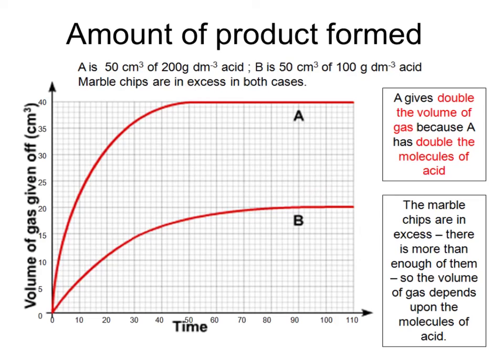And a similar idea here, again using yet another different chemical reaction, here between hydrochloric acid and marble chips to produce carbon dioxide gas, and measuring the carbon dioxide gas. If we have two situations, one where we've got 50 cubic centimetres of a 200 gram per cubic decimetre acid, and another one where we have the same amount of marble chips in excess, so plenty of marble chips to go round, this time with 50 cubic centimetres of a half the concentration acid, then in situation B, where we've got half the concentration of acid, and therefore half the number of particles of acid reacting with the marble chips, we're going to get half the volume of the carbon dioxide produced.